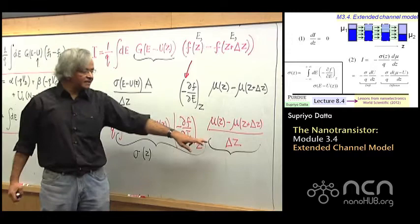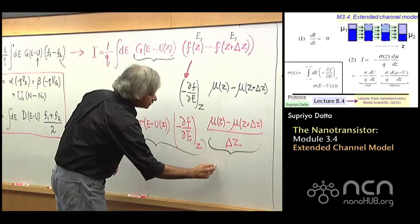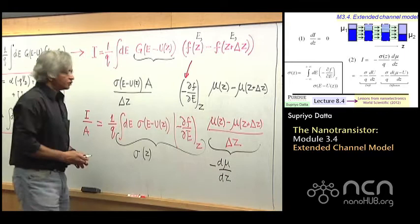And as delta Z tends to zero, you could write this as minus d mu / dZ. Because it's Z and then Z plus delta Z — so this would be like minus d mu / dZ.